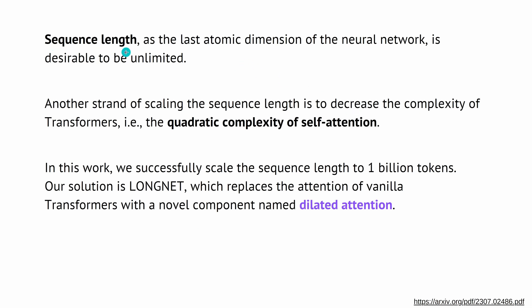Microsoft says the sequence length of our large language model is one of the last frontiers, and they want it to be of unlimited length. Of course, you know that you have a quadratic complexity in the self-attention mechanism of our transformer architecture, since each token refers to each other token. They invent a new form of attention — a simpler, less-compute-intense form — called dilated attention, which reduces the quadratic complexity to a linear complexity times a specific factor. This is how they claim to scale the sequence length to 1 billion tokens, and they call the solution LongNet.